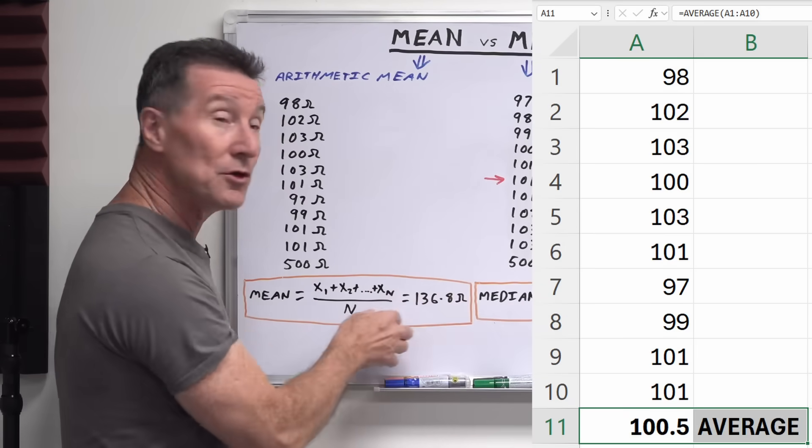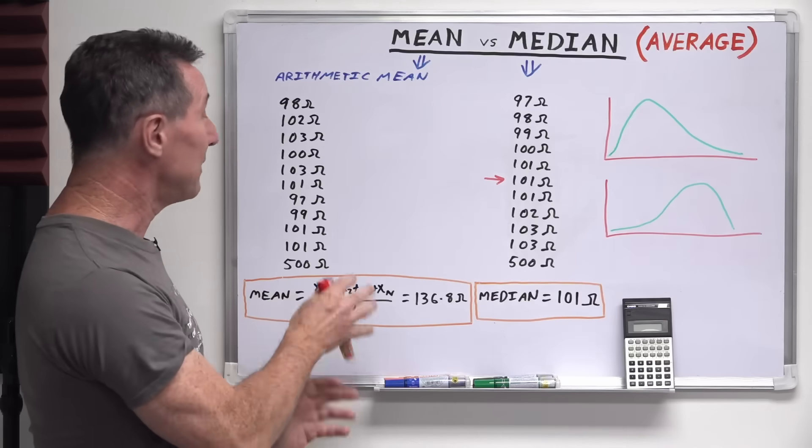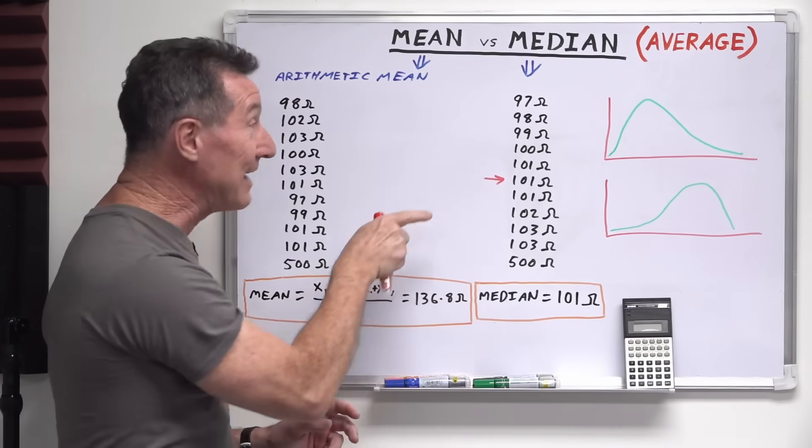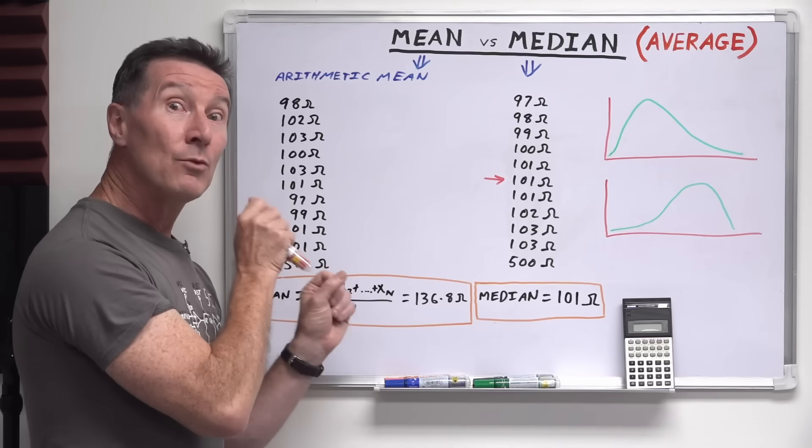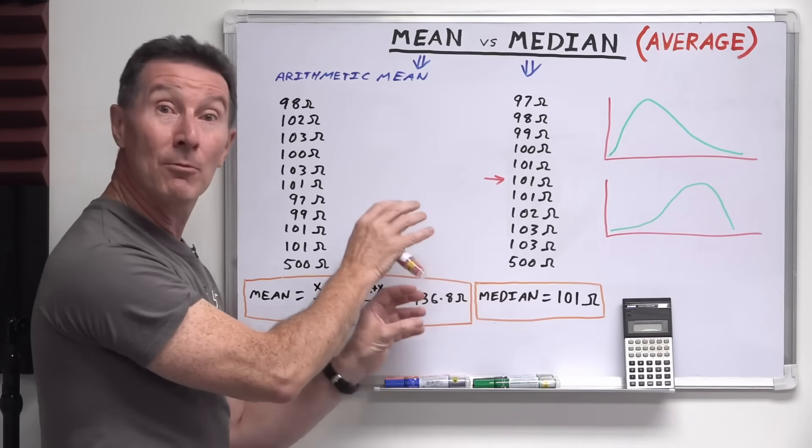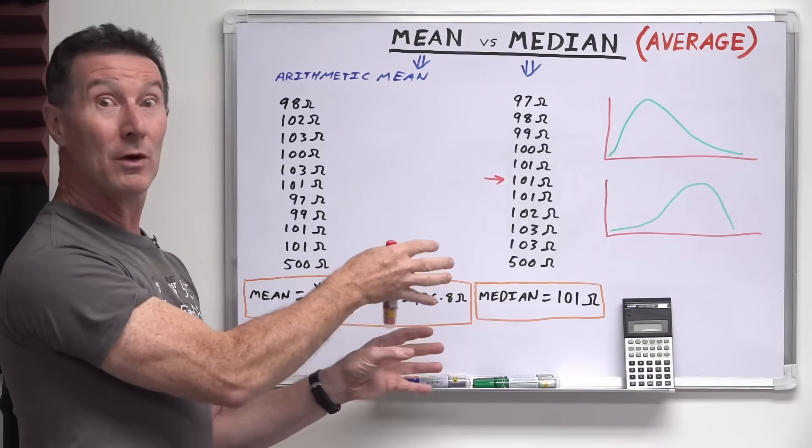So it's very close to the median. So you can see that in this particular case, just by sorting them like this and choosing the middle value, we've effectively eliminated the data without actually removing it from the data set, which you don't want to.